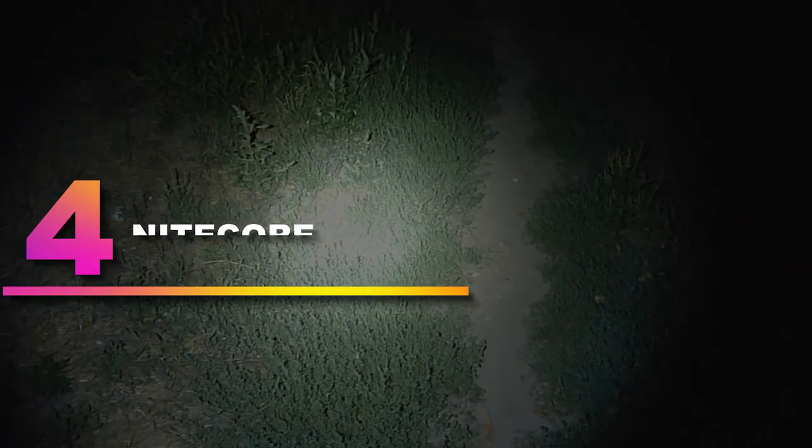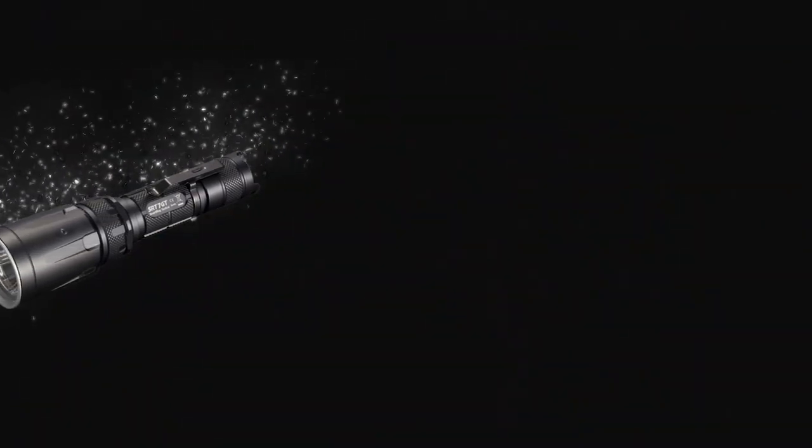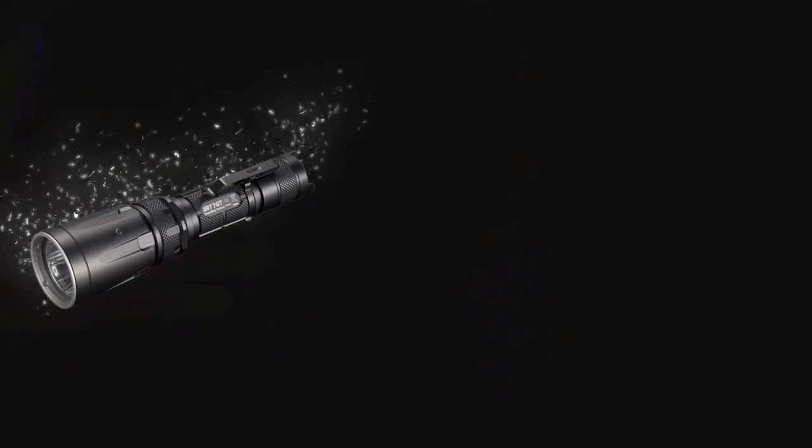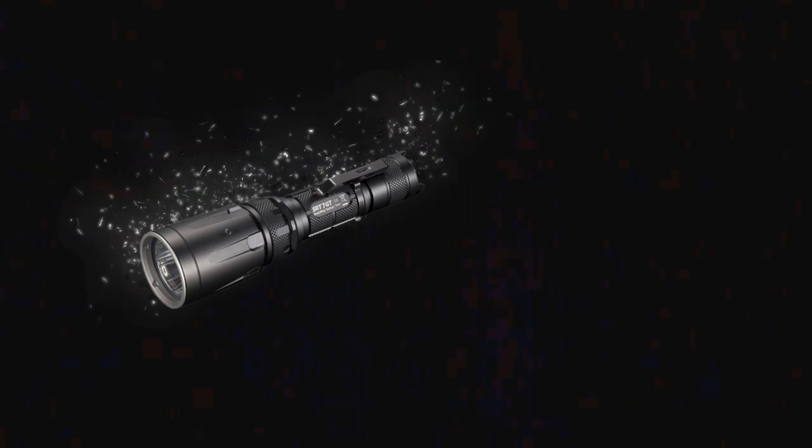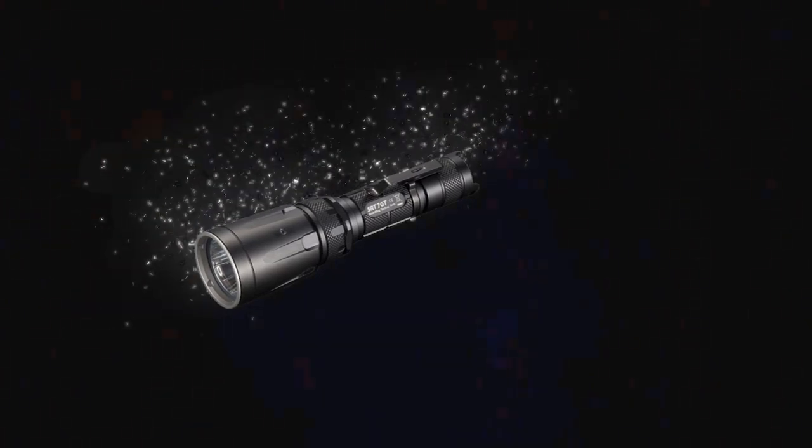Number 4: Nightcore SRT7GT. Nightcore produces some of the market's most technologically advanced flashlights. Don't believe me? Just check out their SRT7GT. It's packed with loads of easy-to-access features. Most notably its twisting dial that allows you to switch between red, green, blue, and UV lights.